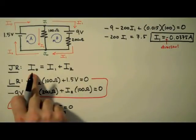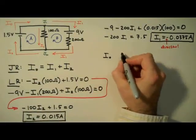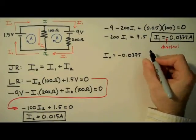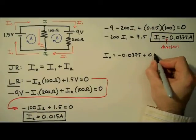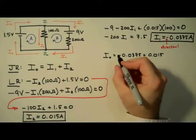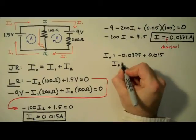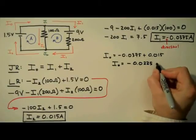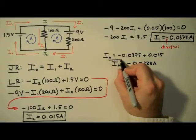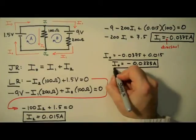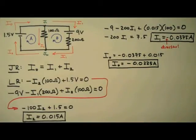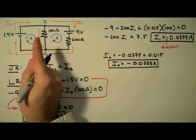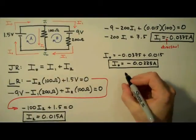Now we're going to take I1 and I2 and plug them into the junction rule to determine I0. So I0 is equal to negative 0.0375 plus 0.015, which gives us I0 equal to negative 0.0225 amps, or negative 22.5 milliamps. Again, this negative sign tells us that the direction we assigned for this current is incorrect — the positive charge is actually flowing the other way.